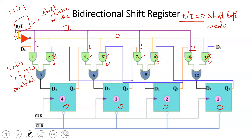Now, in the first clock pulse, the input data is 1 (LSB). DR input is 1, so gate 1 is enabled and its output is 1. Gate 2 output is 0. R-gate 1 has inputs 1 and 0, giving output 1. So D4 gets input 1, the flip-flop stores it. The 0 data is reset. That is the end of the first clock pulse.